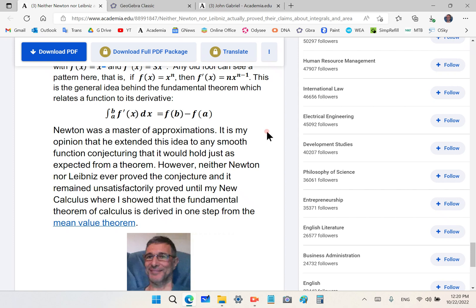Neither Leibniz nor Newton proved the conjecture and it remained unsatisfactorily proved until my new calculus where I showed that the fundamental theorem is derived from the mean value theorem. I do it in two ways: I do it using the flawed machinery of mainstream mathematics and also using the new calculus which does not contain any ill-formed concepts like infinity, infinitesimals, and the circular rot of limit theory.